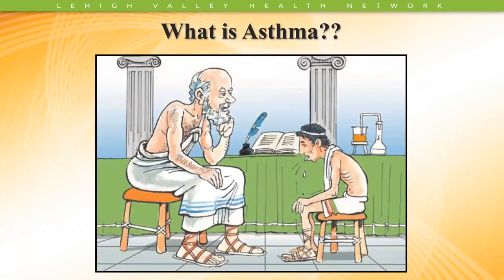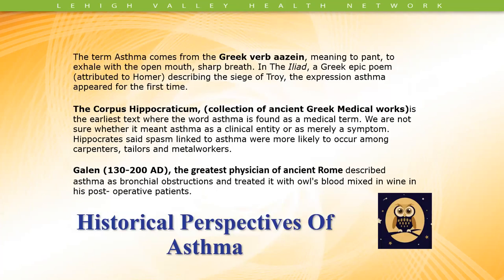Asthma has been around ever since mankind has been around, and it's been recorded back in the earliest periods of time. The term asthma actually comes from the Greek verb 'azenia,' which means to pant, to exhale with an open mouth, and sharp breathing. In the Iliad, a Greek epic poem attributed to Homer, describing the siege of Troy, he basically described the expression asthma for the first time — that's the first time asthma really appeared in written text.